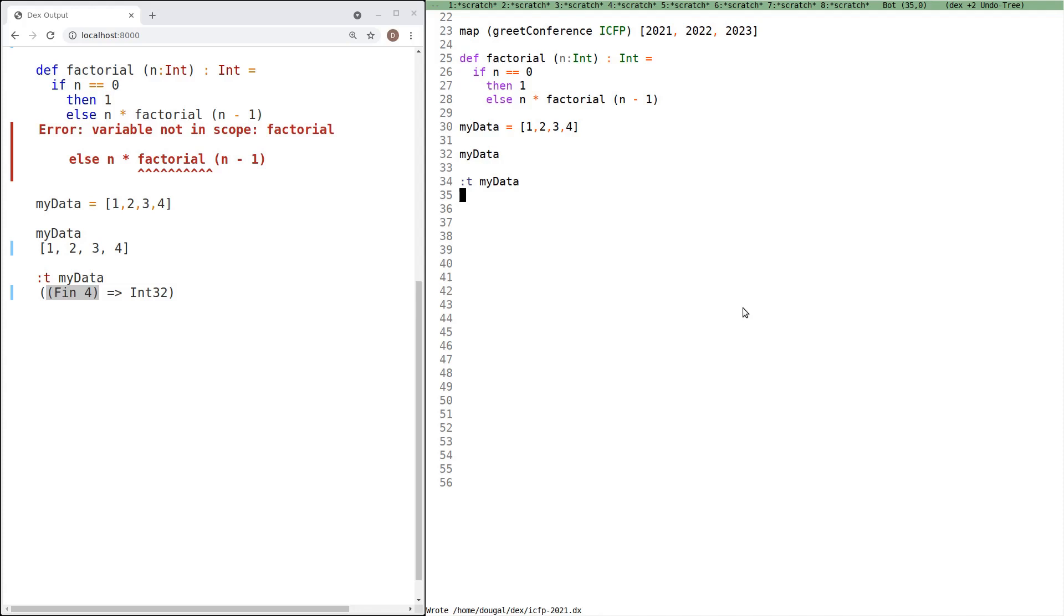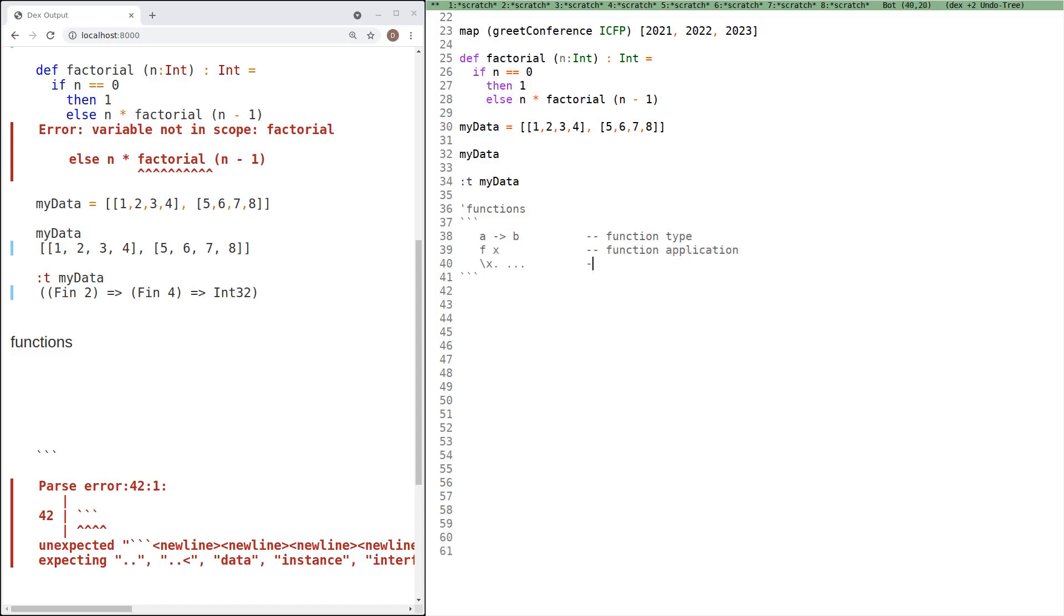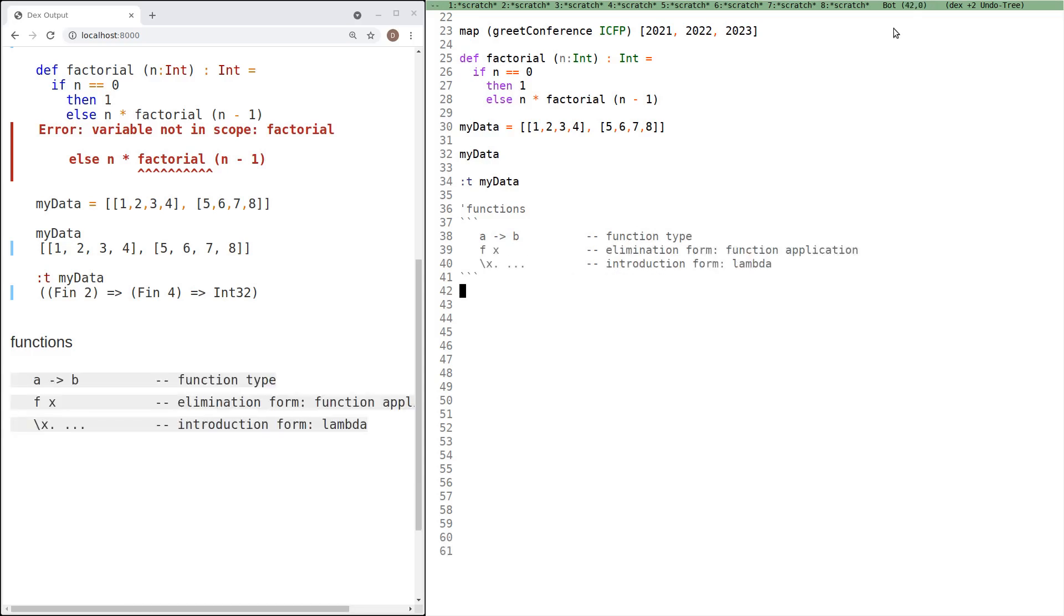And actually this analogy between arrays and functions, we carry it all the way through. So for example, a higher dimensional array, if we made this a nested array, we see it's just like a binary function, in fact a curried binary function. And of course we could also have the uncurried form.